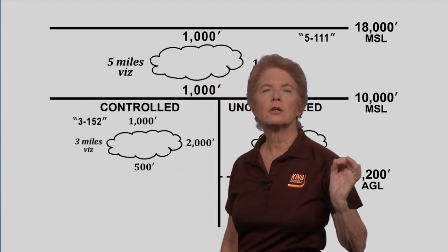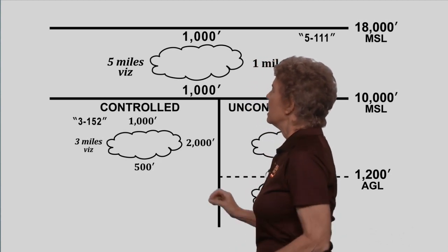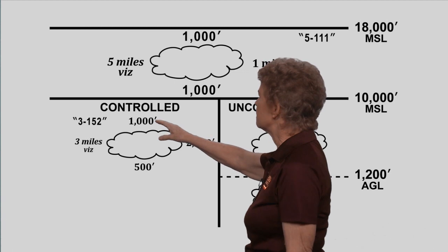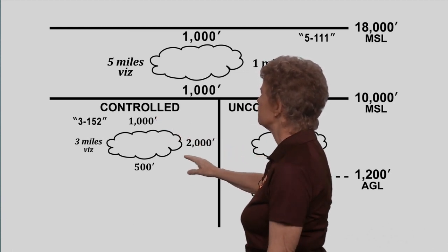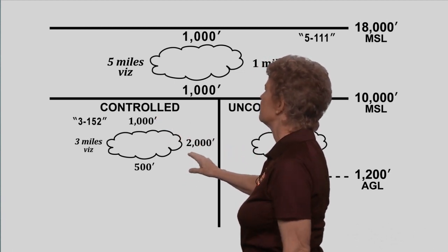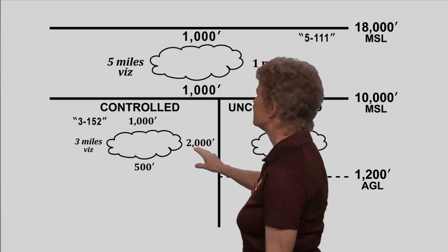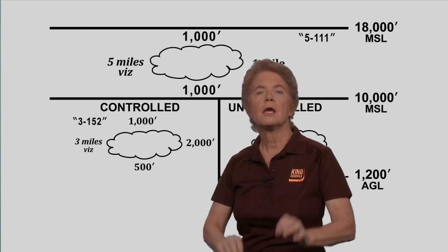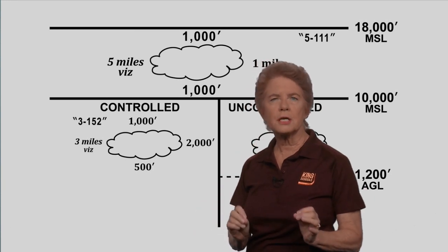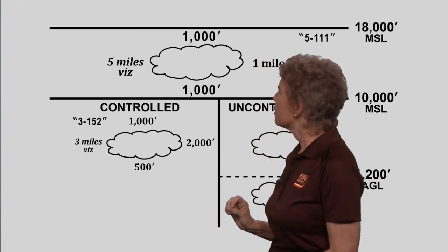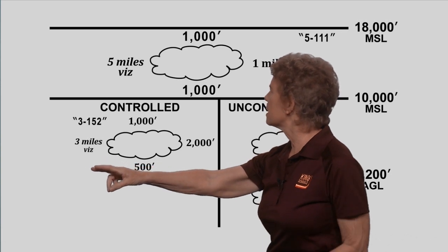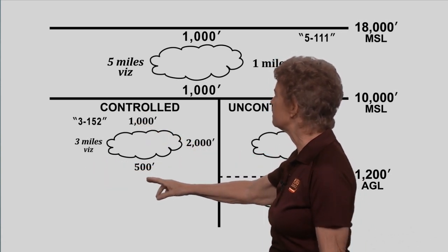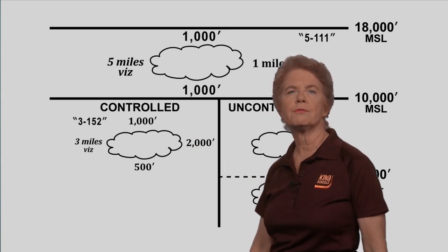For the cloud in the controlled airspace, it's 500 feet below, 1,000 feet above, and 2,000 feet horizontally from the cloud. Just keep doubling those distances with three statute miles in-flight visibility. Think three Cessna 152s, three miles visibility, 1,000 feet above, 500 feet below, 2,000 feet horizontally.